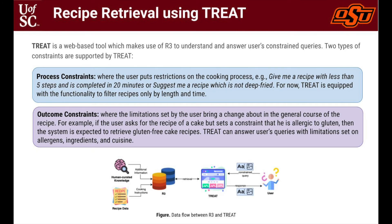In order to test the efficacy of R3, we created a web-based tool called Treat to understand and answer user's constraint queries pertaining to cooking. Two types of constraints are supported by Treat. The first one being process constraints, where the user puts restrictions on the cooking process. For example, the user might be in a time crunch and can ask Treat to give a recipe with less than 5 steps and can be cooked under 20 minutes. For now, Treat is equipped with the functionality to filter recipes only by length and by time. The second type is outcome constraints, where the limitations set by the user bring a change in the general course of the recipe. For example, if the user asks for a recipe of a cake but sets a constraint that he is allergic to gluten, then the system is expected to retrieve gluten-free cake recipes. Treat can answer user's queries with limitations set on allergens, ingredients and cuisine.